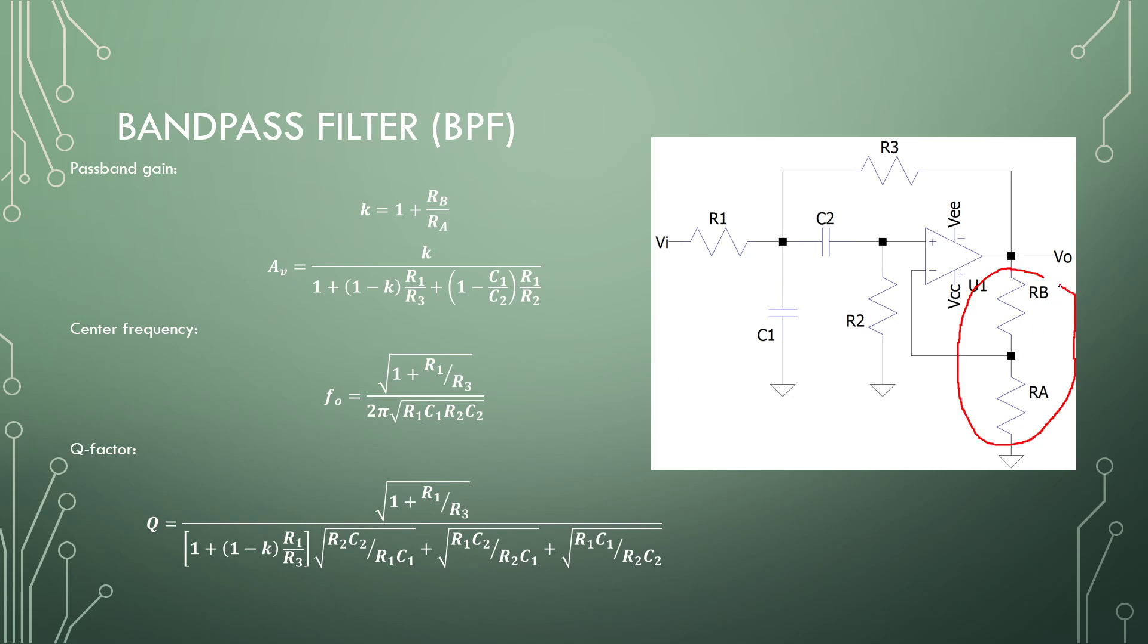Again, the gain is responsible for the Q factor, mainly. It is also a little bit dependent on the ratio of some of the resistors that you have. The center frequency depends on all the component values. And note that the final gain of this amplifier is not just the gain of the two resistors at the output, but it is also a function of all the components and the gain that you selected. So the band pass filter is a little bit more complicated.